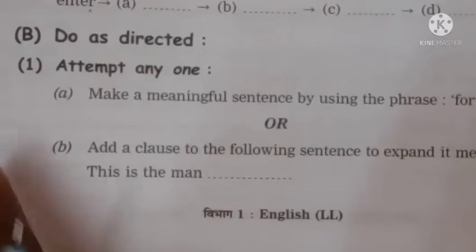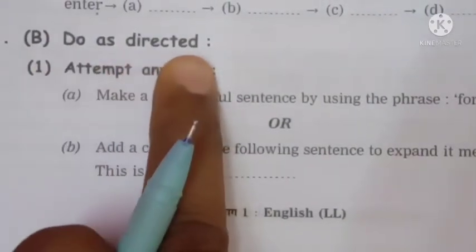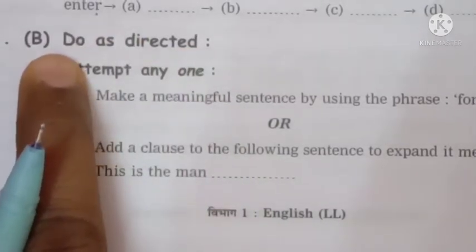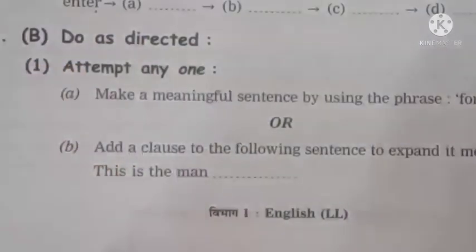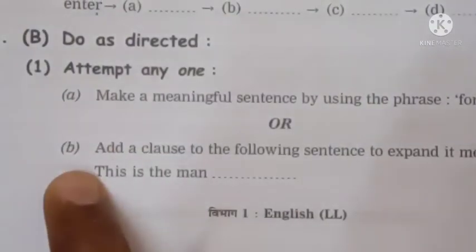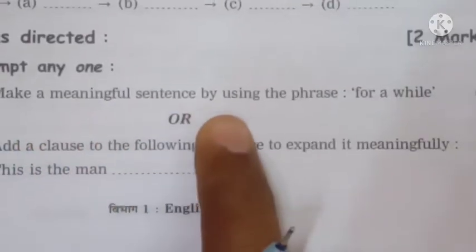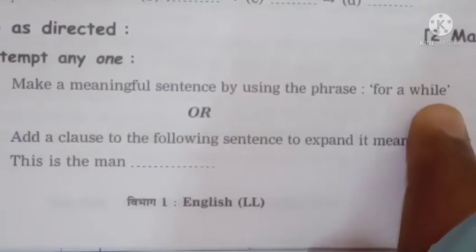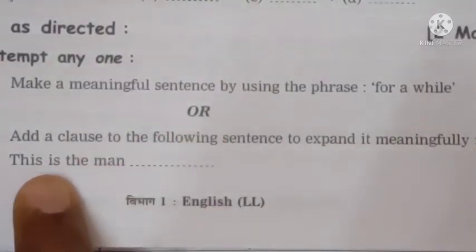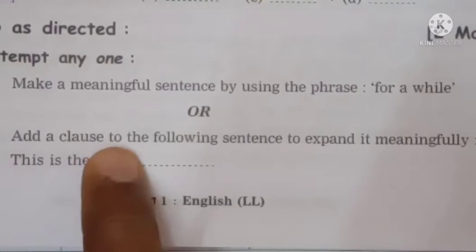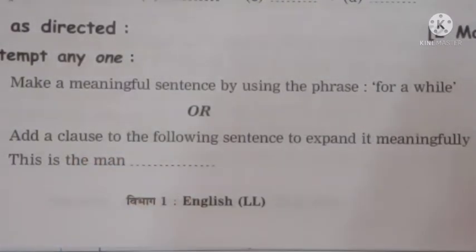Now question 1B — do as directed. This is the second section, and it's a bit difficult. The first activity gives you two options: A or B. Option A says: make a meaningful sentence by using the phrase 'for a while'. Option B says: this is the man — complete the sentence by adding a clause. Let's look at both examples.